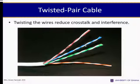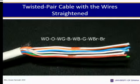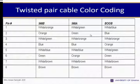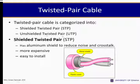A typical example shows the color coding with blue, green, brown, and orange pairs. Twisting the wires reduces crosstalk and interference. Twisted pair cable is categorized into shielded twisted pair (STP) and unshielded twisted pair (UTP), with the color coding also shown for reference.